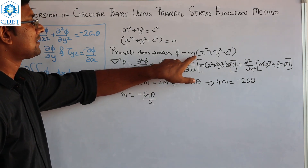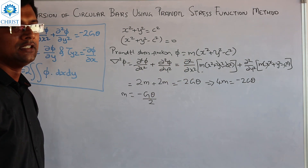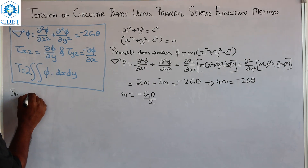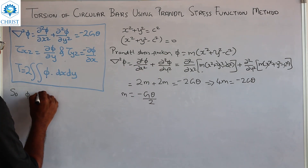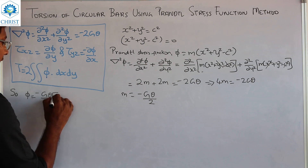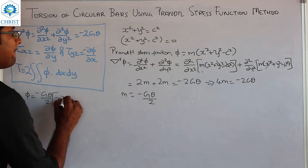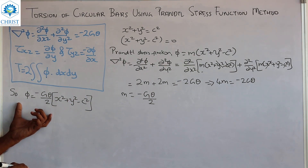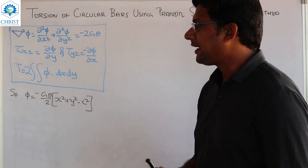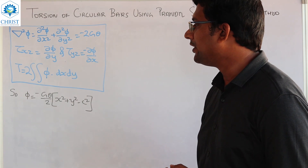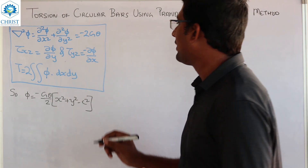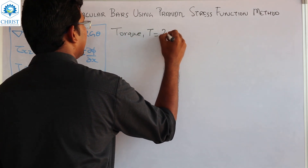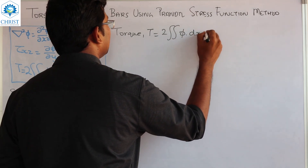So, m is equal to −Gθ/2. Therefore, the Prandtl stress function φ is equal to (−Gθ/2)(x² + y² − c²). That is the value of the Prandtl stress function φ for a circular cross section. Next, torque T is equal to 2 times the double integral of φ dx dy.